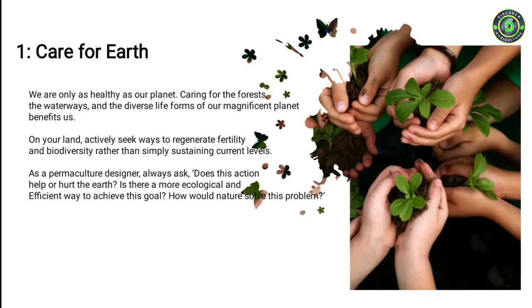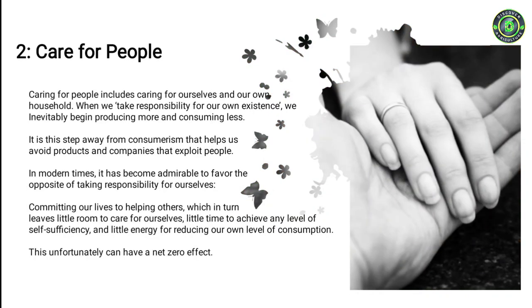As a permaculture designer, always ask: does this action help or hurt the earth? Is there a more ecological and efficient way to achieve this goal? How would nature solve this problem? Care for people includes caring for ourselves and our own household. When we take responsibility for our own existence, we inevitably begin producing more and consuming less — a step away from consumerism. In modern times it has become admirable to commit our lives to helping others, which can leave little room to care for ourselves or achieve any level of self-sufficiency, and little energy for reducing our own level of consumption. This unfortunately can have a net zero effect.